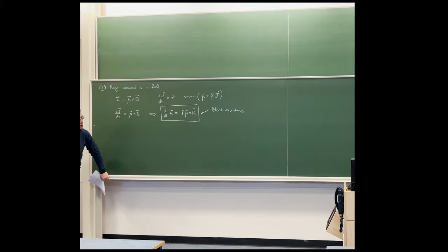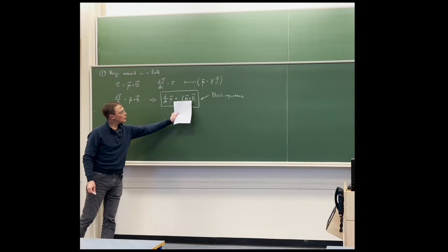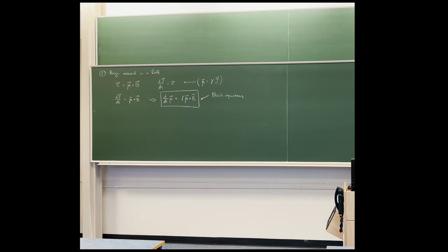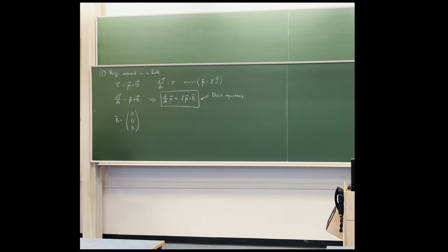These are called Bloch equations. They will acquire further terms as we go along - terms that govern the return of magnetization to thermal equilibrium. But for now, these are our equations. Let us consider the common case when the magnetic field is vertical. Our field B will be 0 on x, 0 on y, and some component on z. We put a 0 subscript to remind ourselves this field pertains to our big magnet, the 14 Tesla.